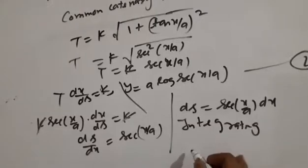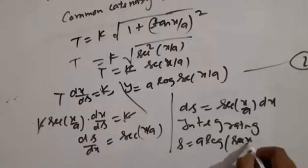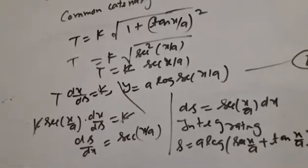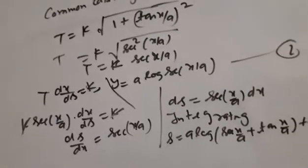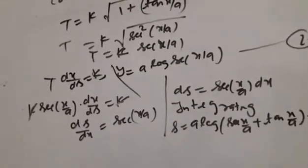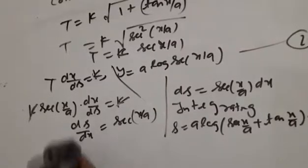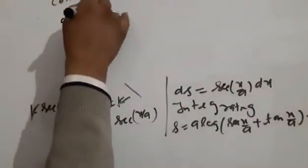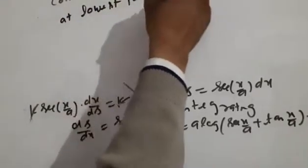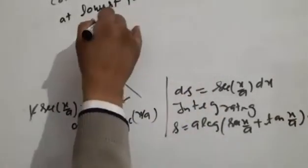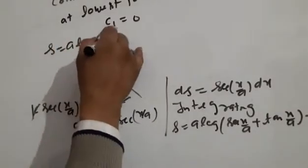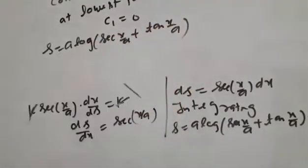Integrating, s equals a·log(sec(x/a) + tan(x/a)) + C1, where C1 is an integral constant. Taking arc length measured from the lowest point, at the lowest point x = 0 and s = 0, so C1 = 0. Therefore s = a·log(sec(x/a) + tan(x/a)).